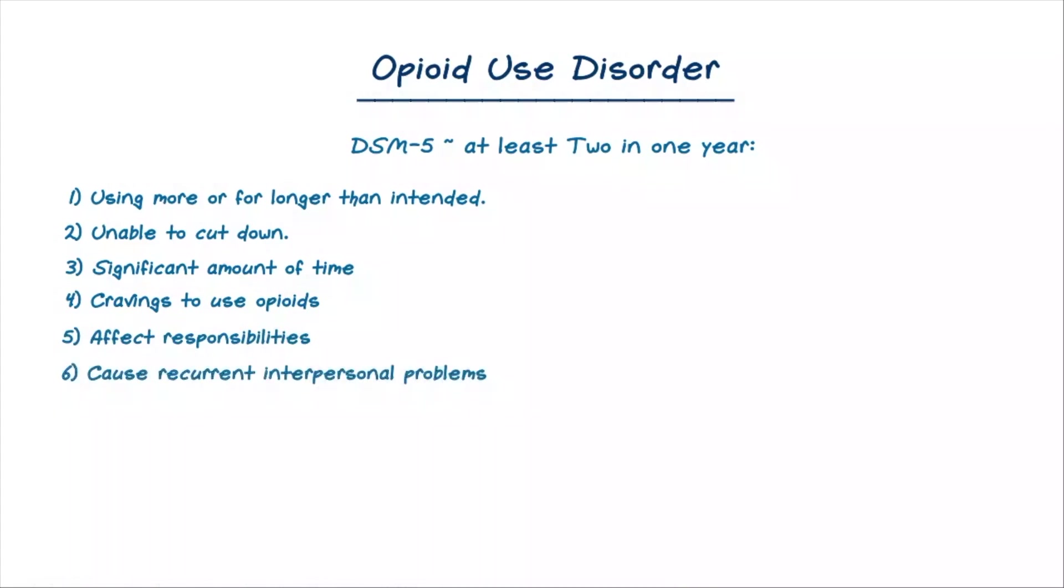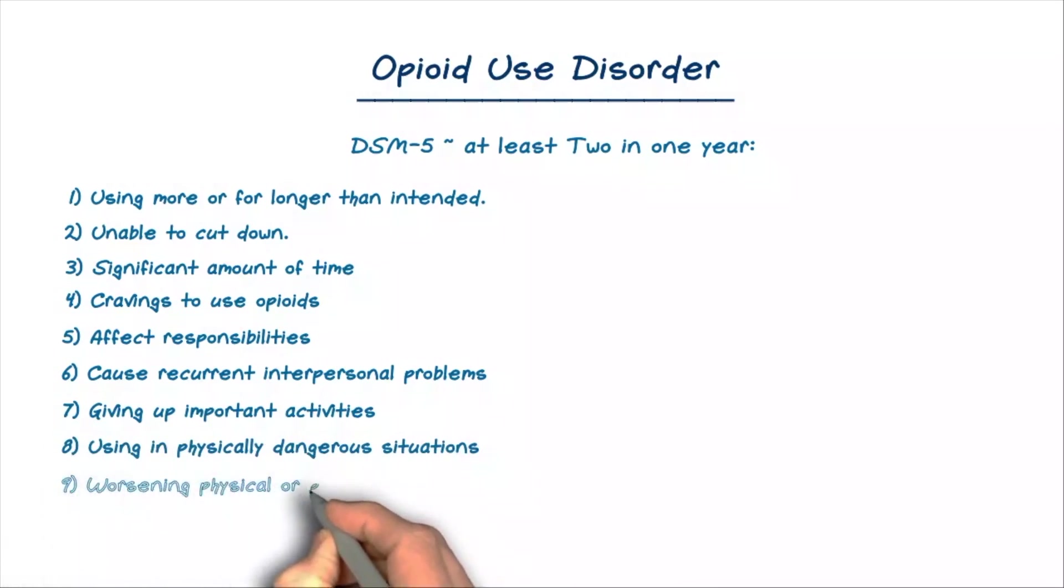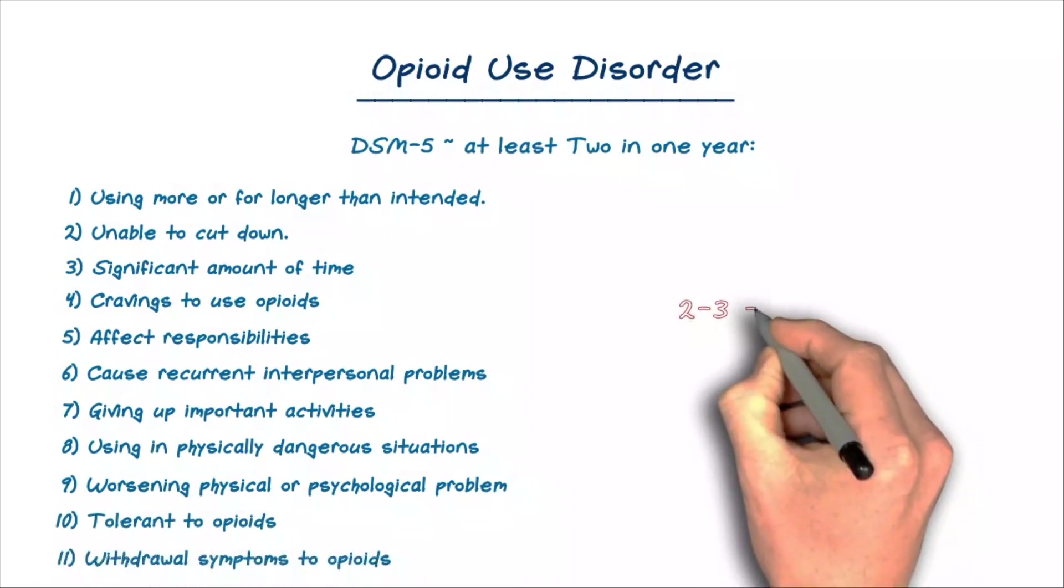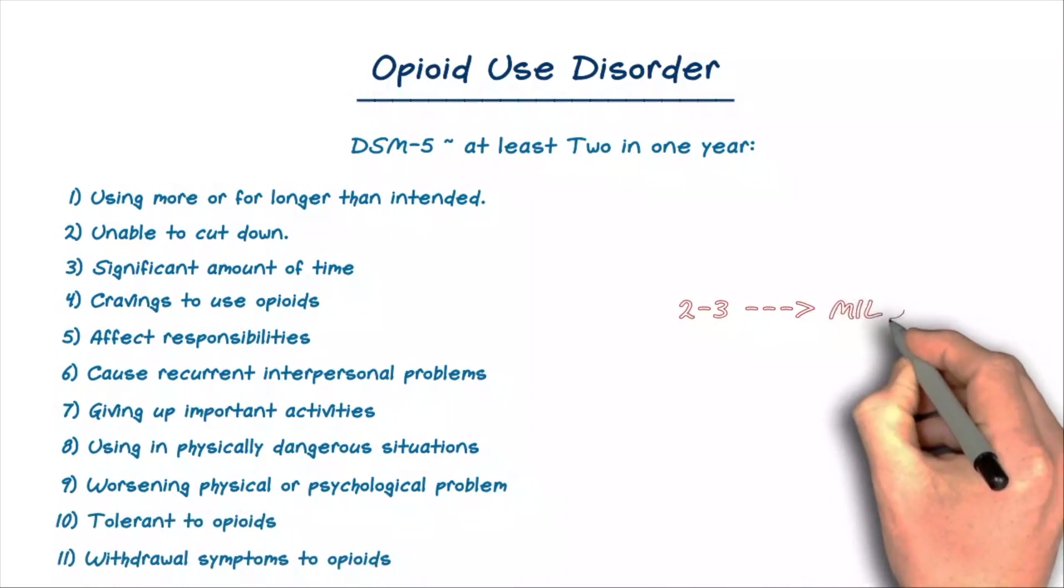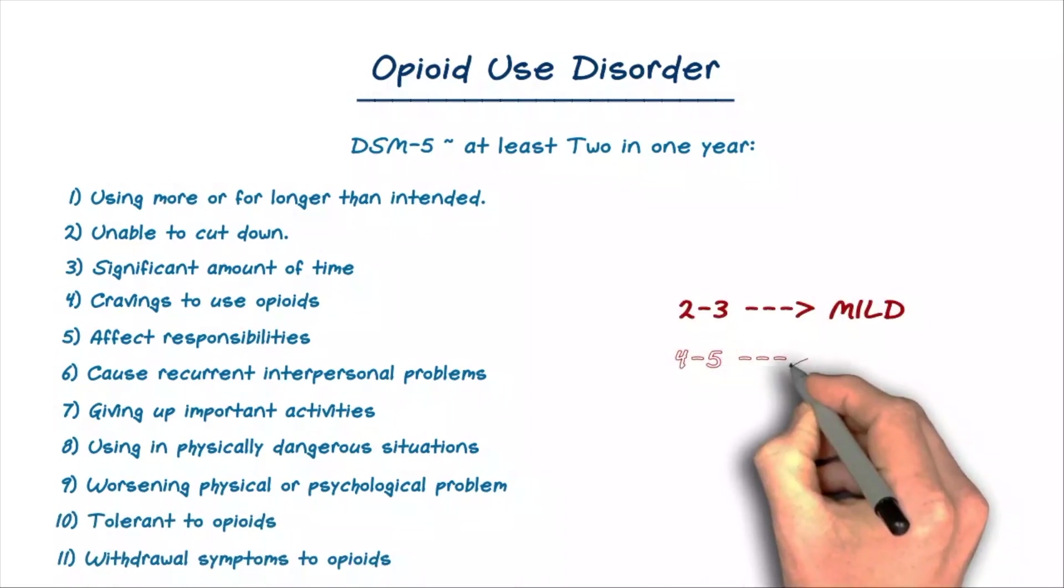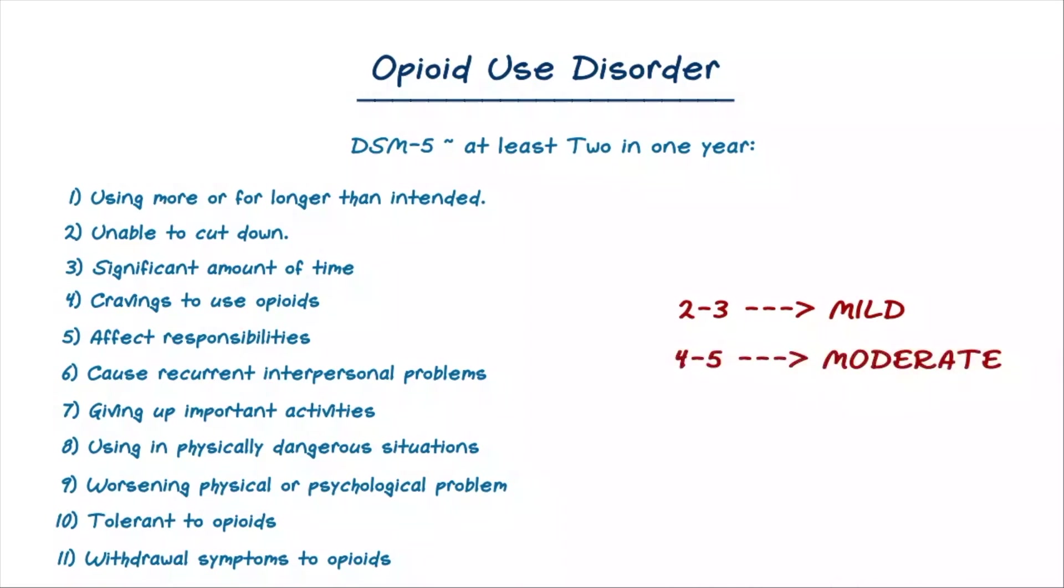Seventh, giving up important activities in order to use opioids. Using opioids in physically dangerous situations. Ninth, using opioids even if it's worsening a physical or psychological problem. Tenth, becoming tolerant to the opioids. And finally, eleventh, feeling withdrawal symptoms from opioids. Having two or three of these symptoms is considered mild. Having four or five is considered moderate. And having six or more is considered severe.